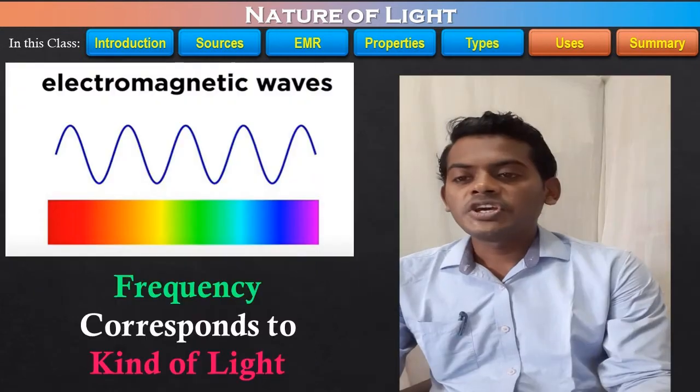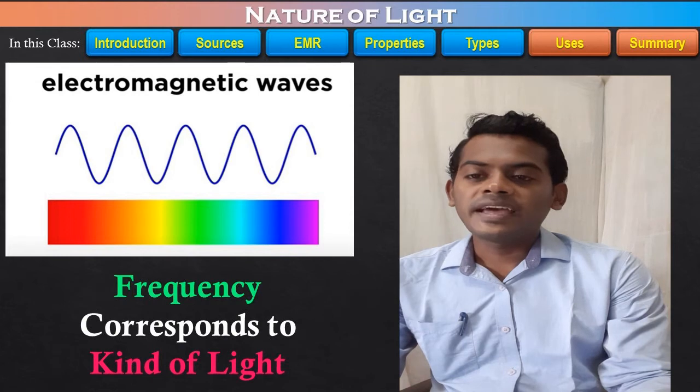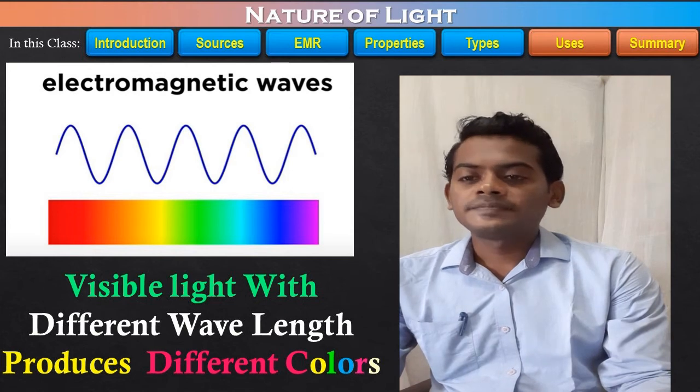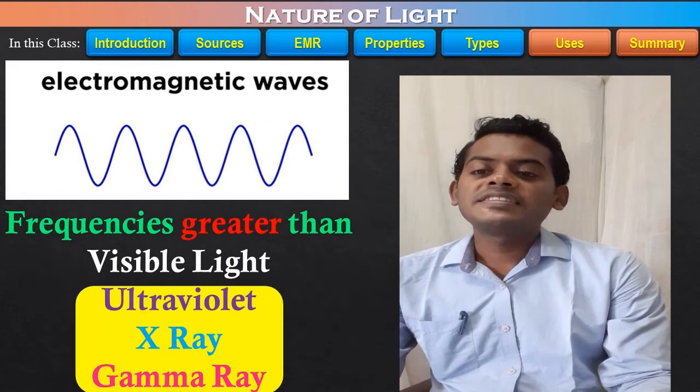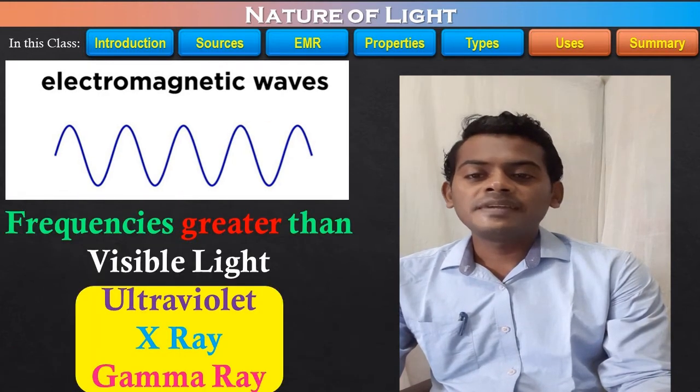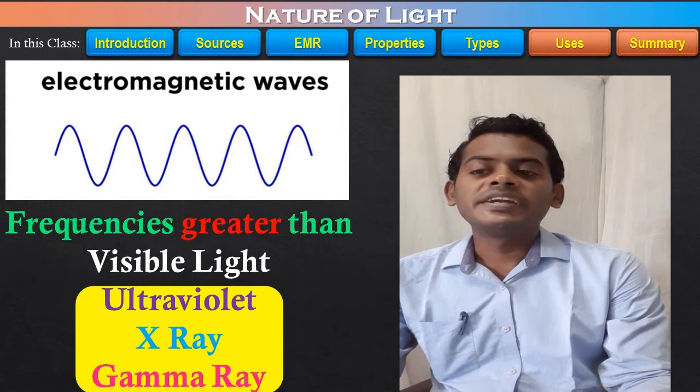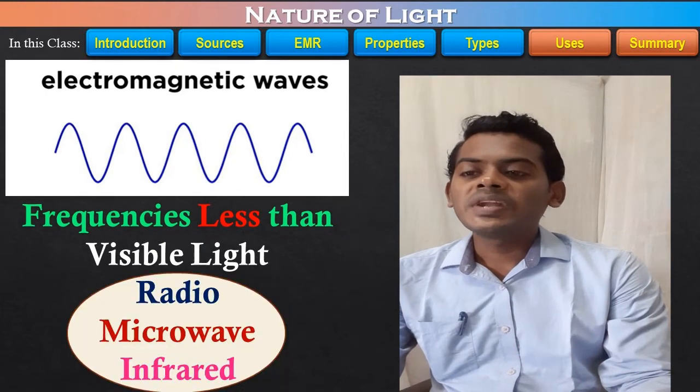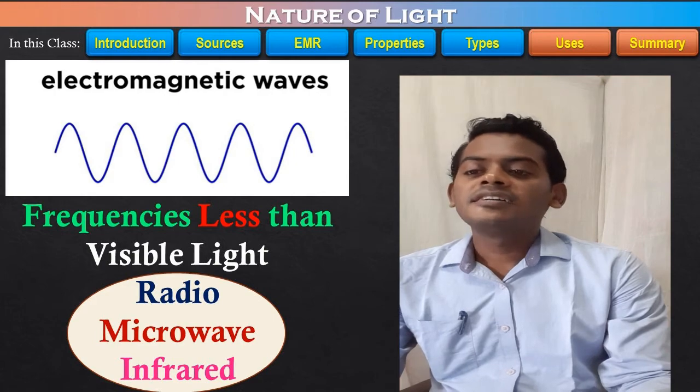Different frequencies produce the different kinds of light. For the visible light, the different frequency will correspond to the different color. Frequencies greater than the visible light are known as the UV radiation, x-rays and gamma rays. And frequency less than the visible light known as the infrared radiation, microwaves and the radio waves.